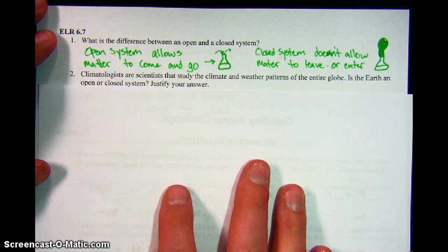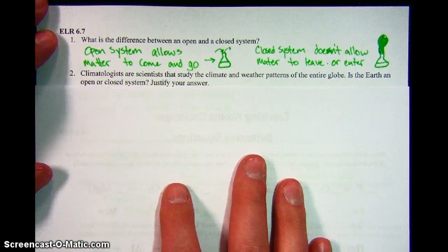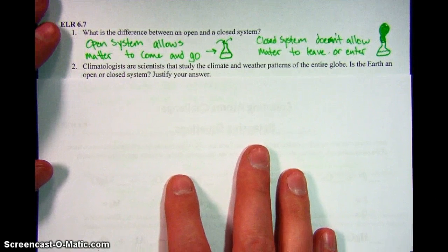Number two, climatologists and the Earth. The question is asking if the Earth is an open or closed system and to justify.